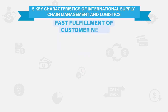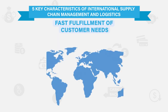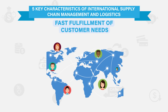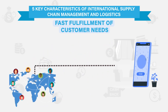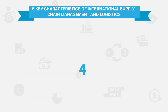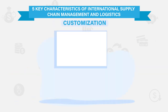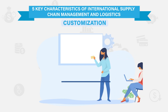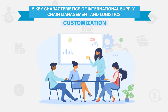Number three: fast fulfilment of customer needs, which is becoming more and more important as people around the world prefer using their mobile devices as a faster way to find and get what they need. Number four: customisation, which means that the supply chain will be adjusted so that it will be capable of meeting the demands of the clients.